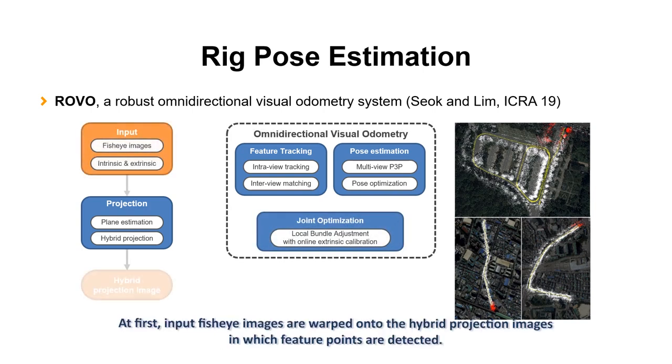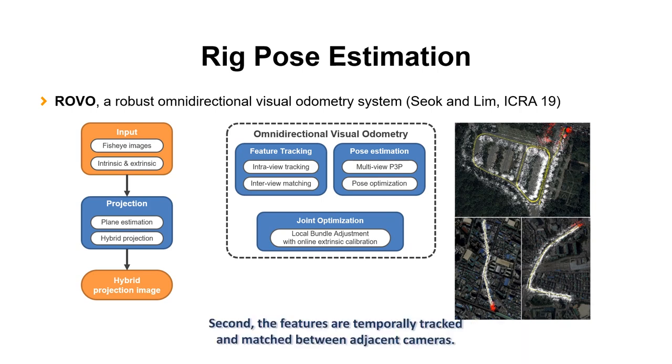At first, input fisheye images are warped onto the hybrid projection images in which feature points are detected. Second, the features are temporally tracked and matched between adjacent cameras.